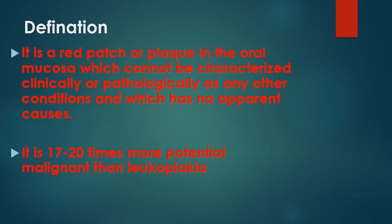Starting with the definition: erythroplasia is a red patch or plaque in the oral mucosa which cannot be characterized clinically or pathologically as any other condition, and which has no apparent causes. Just like leukoplakia, it is a patch or plaque in the oral mucosa — but in leukoplakia there is a white patch, while here we have a red patch. The exact cause of erythroplasia is unknown.